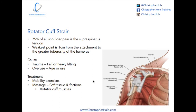To start off with what it is — it's obviously a condition of the shoulder. Now 70% of all shoulder pain is the supraspinatus tendon. The weakest point is one centimeter from the attachment to the greater tuberosity of the humerus.